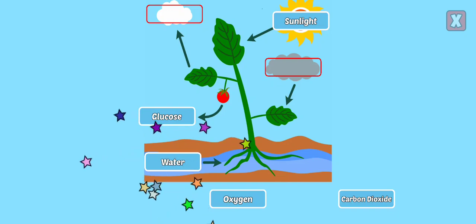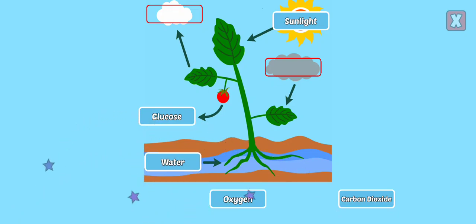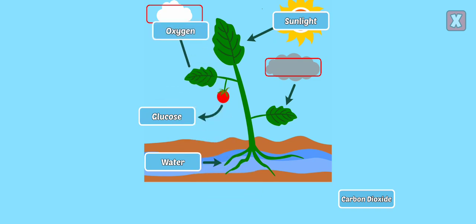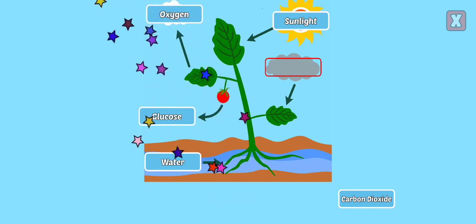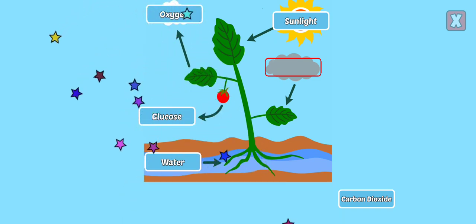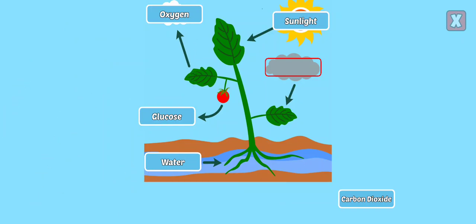Water. Water is absorbed by the roots of the plant and passes up the stem on its way to the leaves. Oxygen is released from the leaves into the atmosphere as the byproduct of photosynthesis.